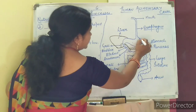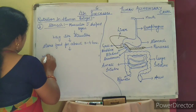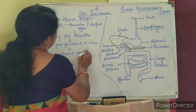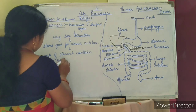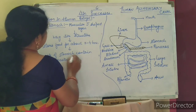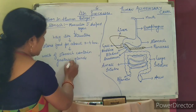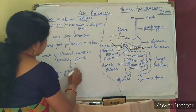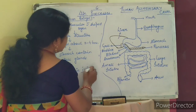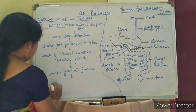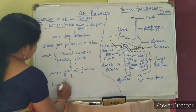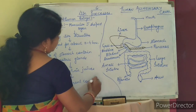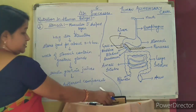The walls of the stomach contain gastric glands. These gastric glands secrete gastric juices. The gastric juices have different components, and we will study all of them.